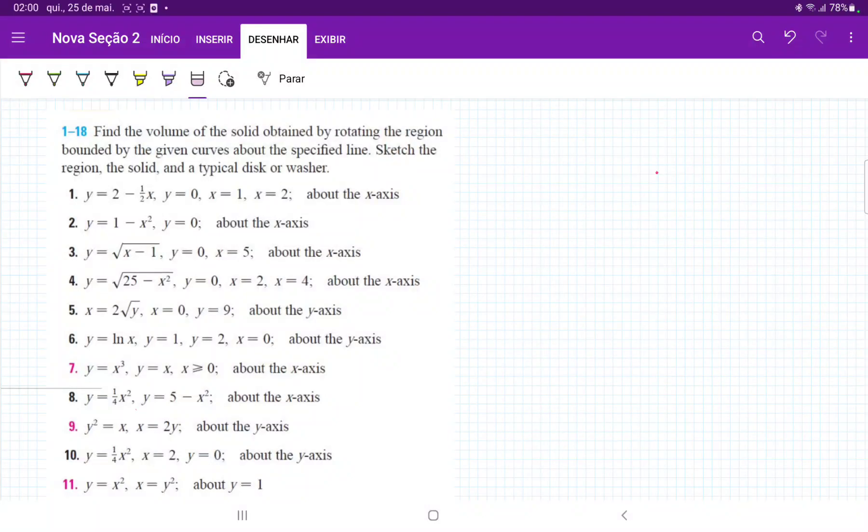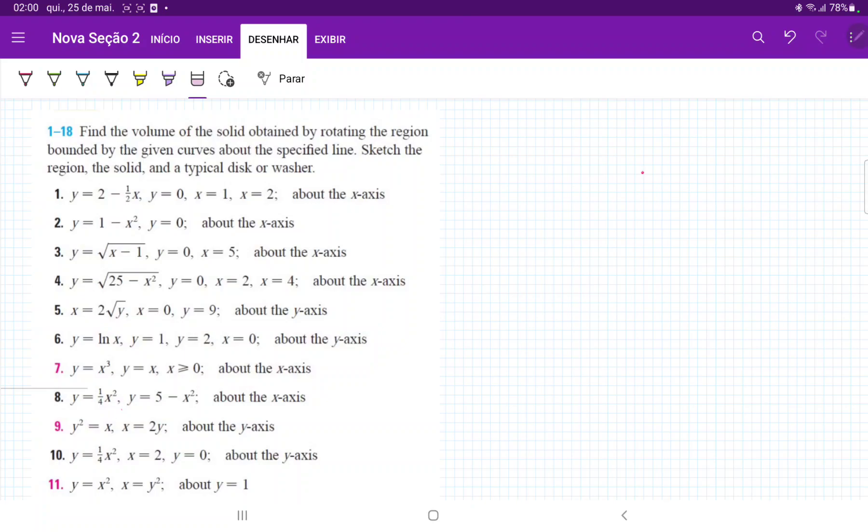So for number 9, we are drawing these curves here. So y squared is equal to x, and x is equal to 2y.